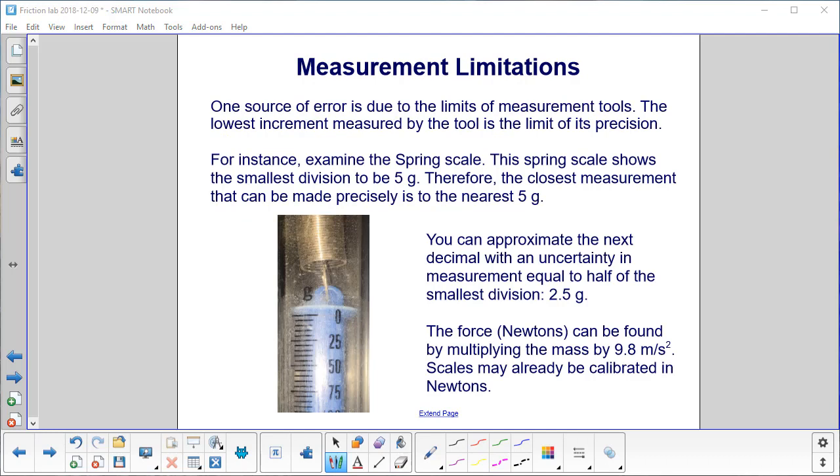One source of error is due to the limits of your measurement tools. The lowest increment measured by the tool is the limit of its precision. For example, examine the spring scale over here. This shows that the smallest division to be 5 grams.